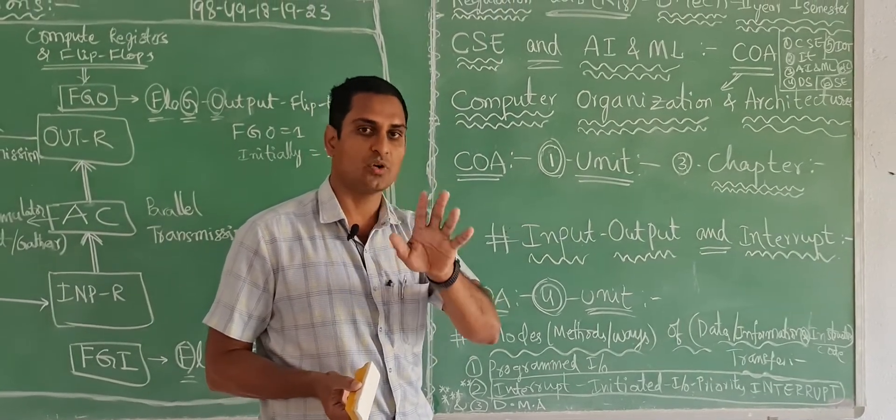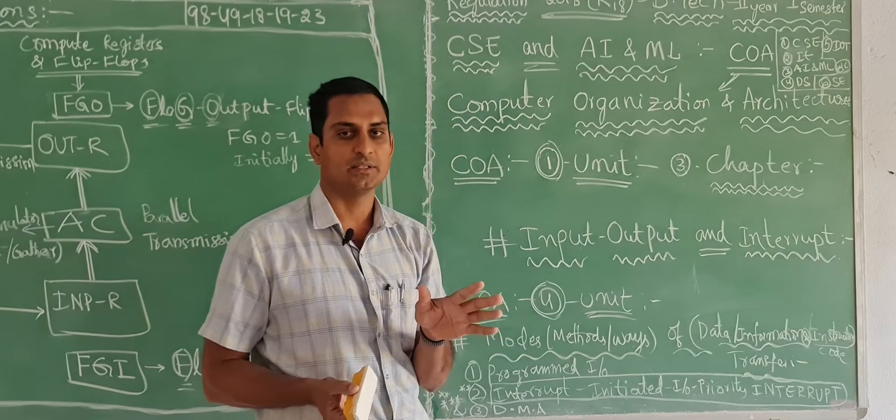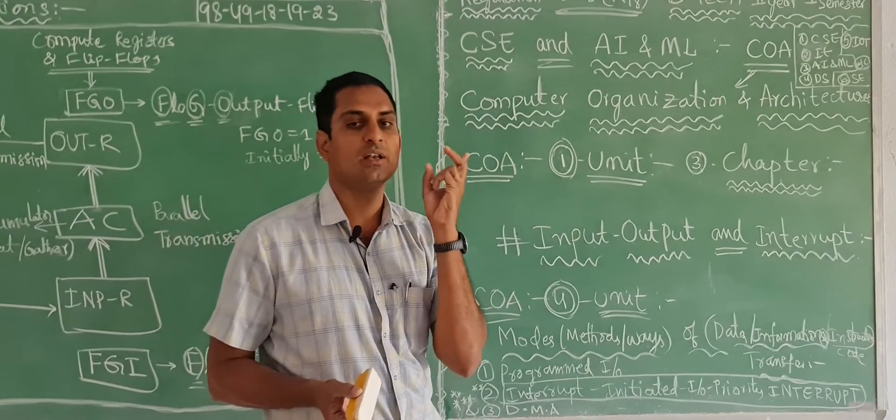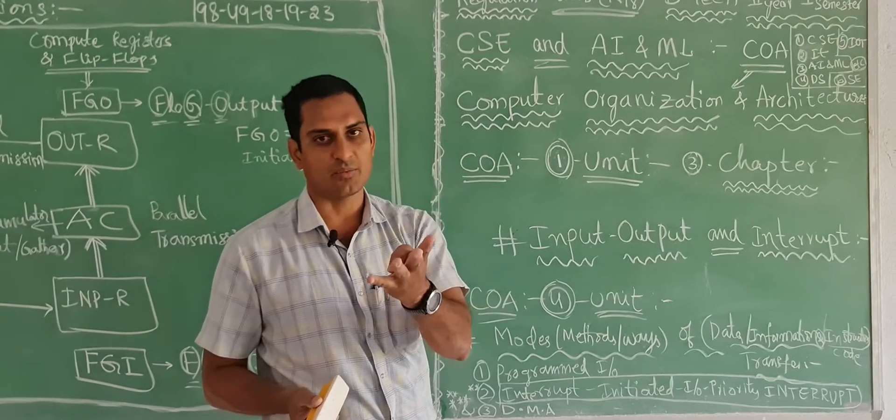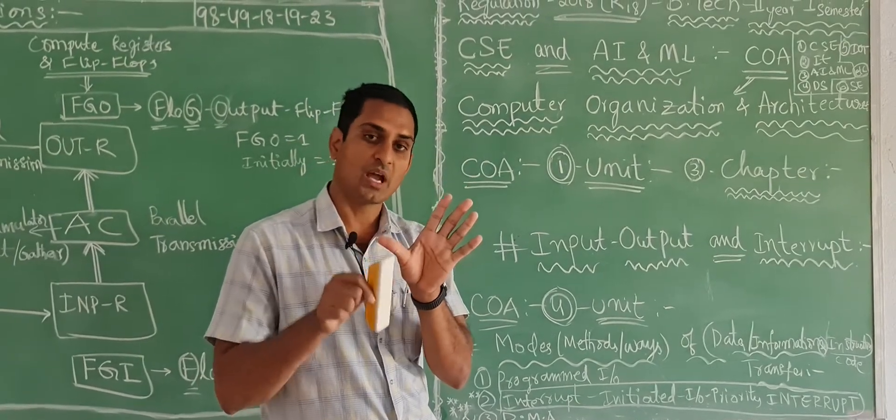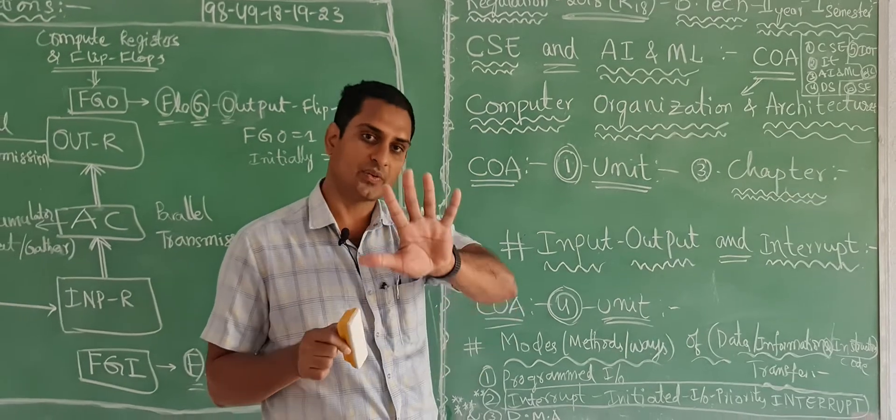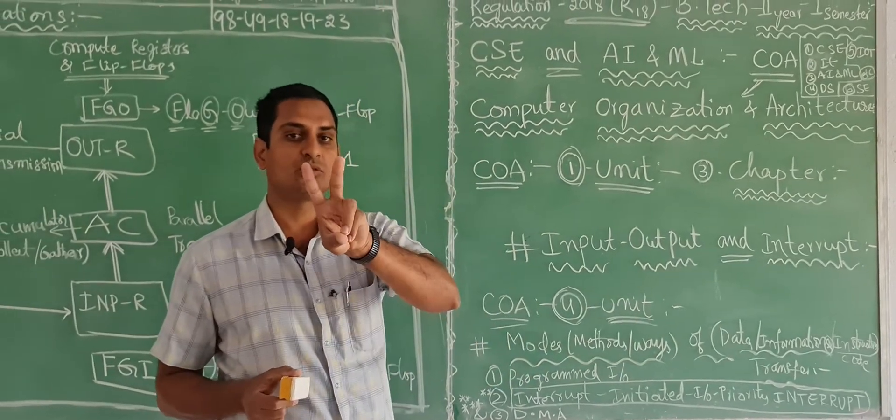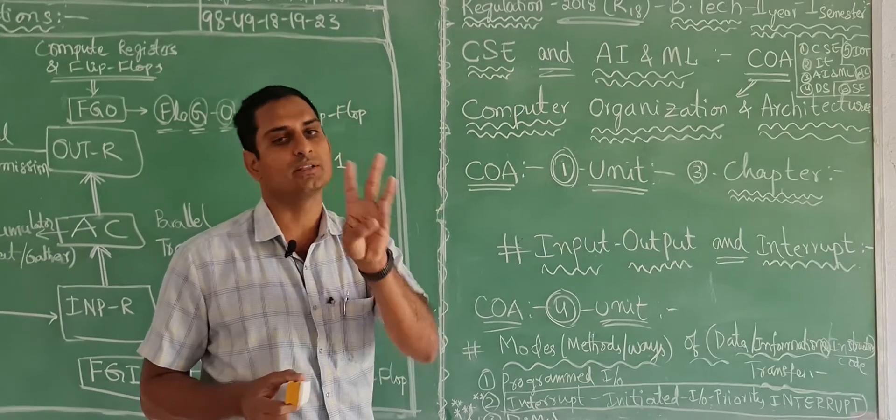These are four. Out of these four you will get two questions compulsory: register transfer micro operation, arithmetic micro operation, logic micro operation, shift micro operation. And apart from that fifth we have one more, arithmetic logic and shift unit. Out of those five, two or three questions will be compulsory.